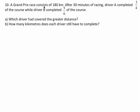Question 10. A Grand Prix race consists of 180 kilometers. After 30 minutes of racing, driver A completed three-quarters of the course, while driver B completed five-sixths of the course.